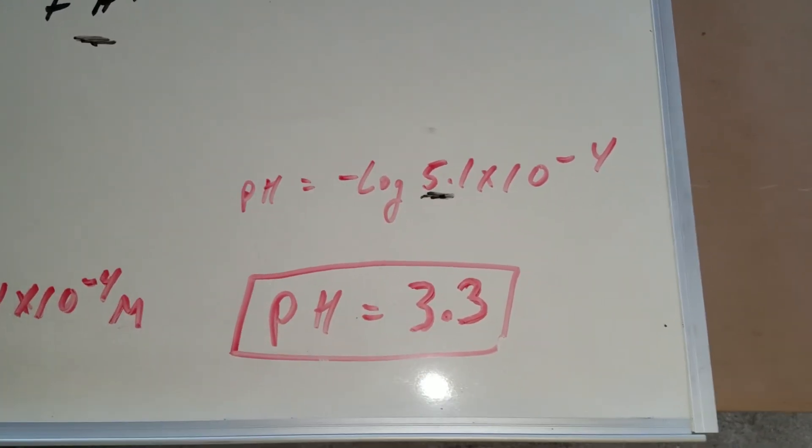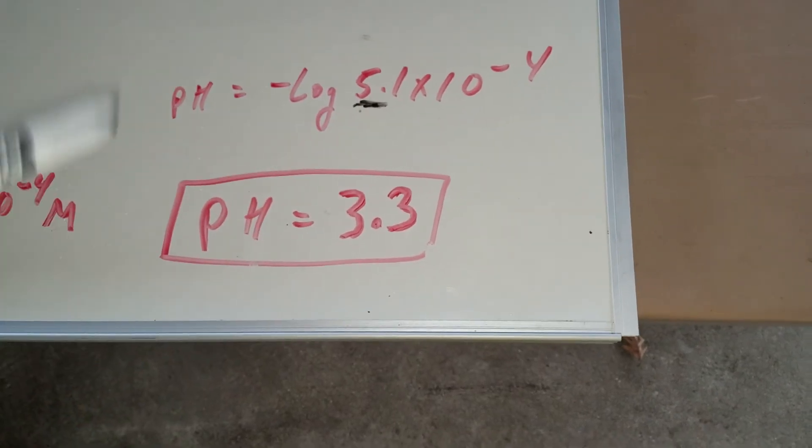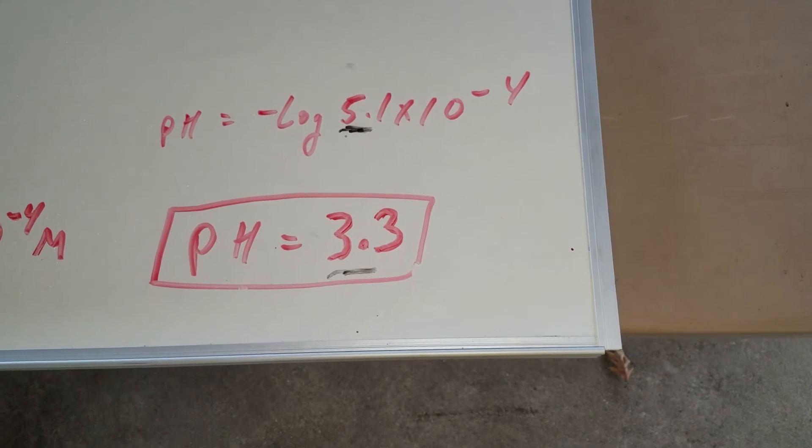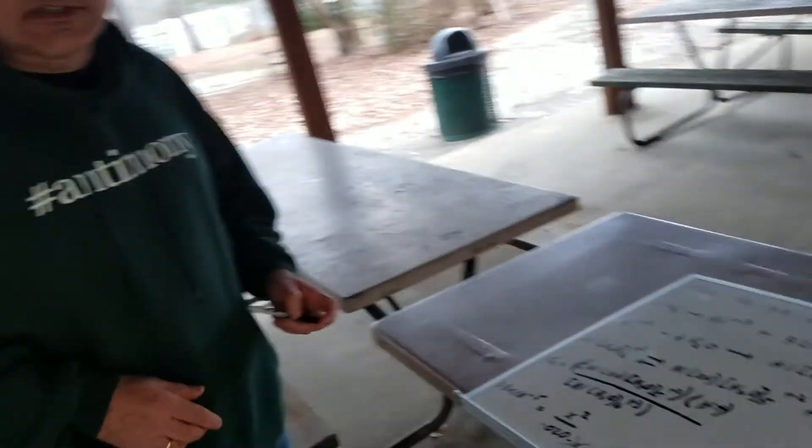For the DAT exam or the OAT, as long as you know that this answer has to be somewhere under 4, I think you're fine. Since this is a 5, we're going to come down quite a bit and we estimate this as 3.3. In the Destroyer, I give you more practice on estimating logarithms.